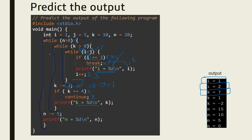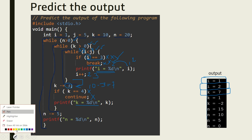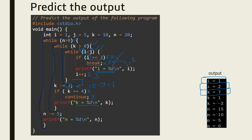It goes back to the while loop and checks k greater than 0. k is 7 so the condition is still true. It comes inside and checks while i less than j, meaning 3 less than 5. Note that i was not incremented when the break occurred, so i remains 3. This condition is true and it comes inside the loop.